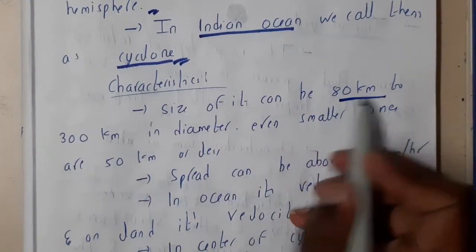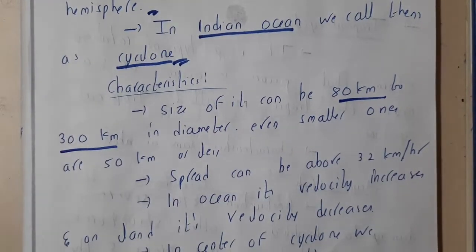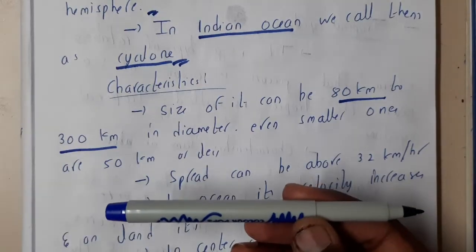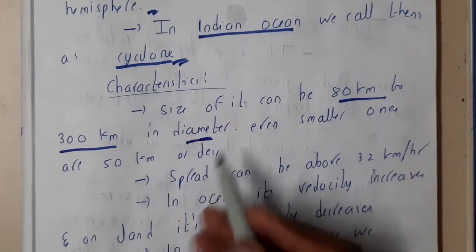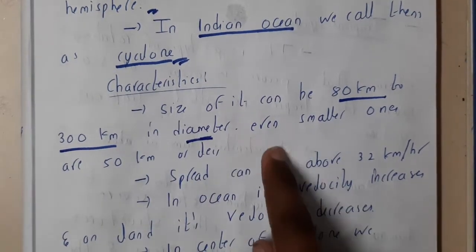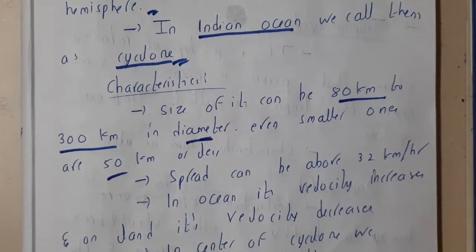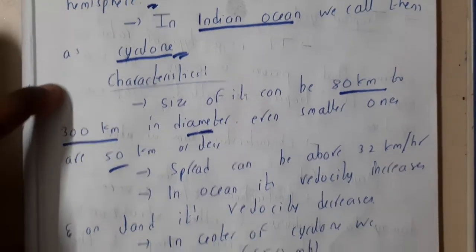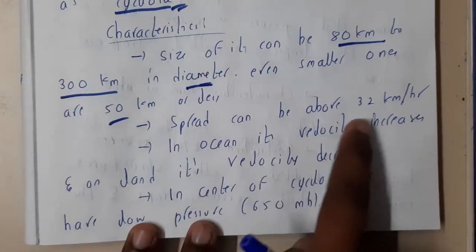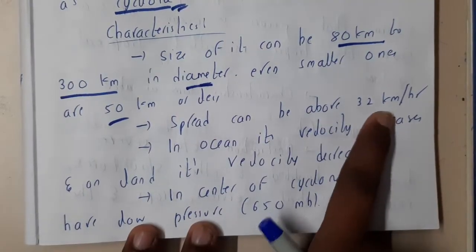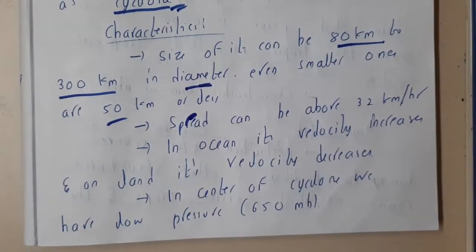The size of a cyclone can range from 80 kilometers to 300 kilometers in diameter. Even smaller ones of 50 kilometers or less are also emerging.